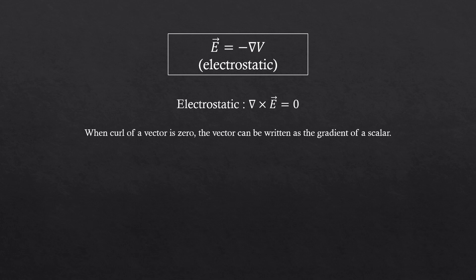In electrostatic, we had the curl of an electric field being equal to zero. When curl of a vector is zero, that vector can be written as a gradient of some scalar. So that was why the electric field in electrostatic was minus gradient of the scalar potential. It's called scalar potential because that potential doesn't have a direction.